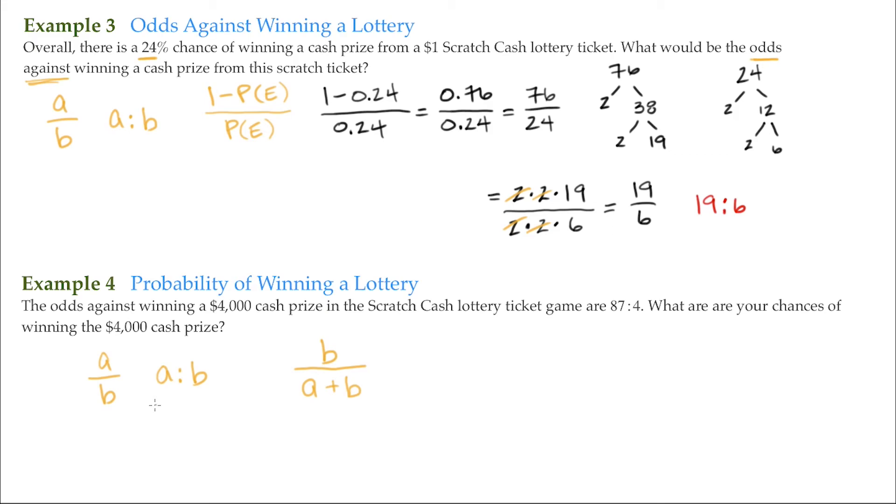So if we have 87 to 4, then we write this as 4 over 87 plus 4, which is 4 over 91. This is approximately 4.4 percent.